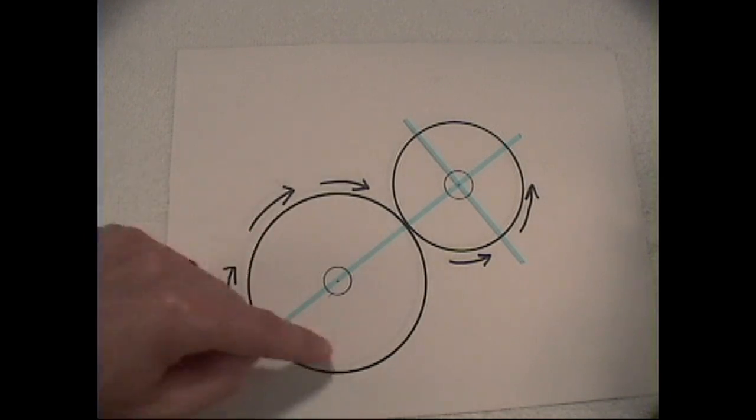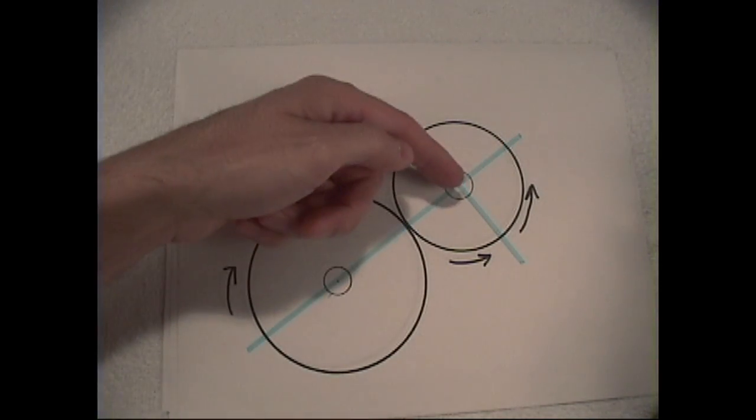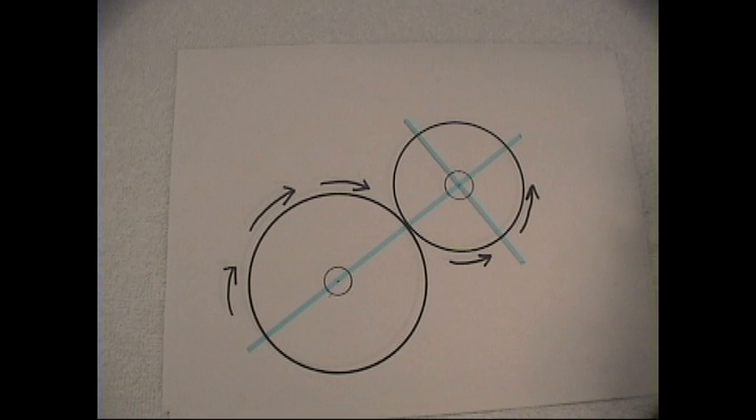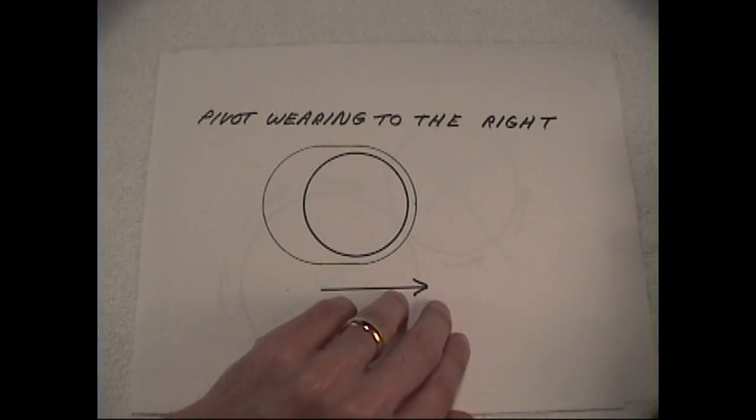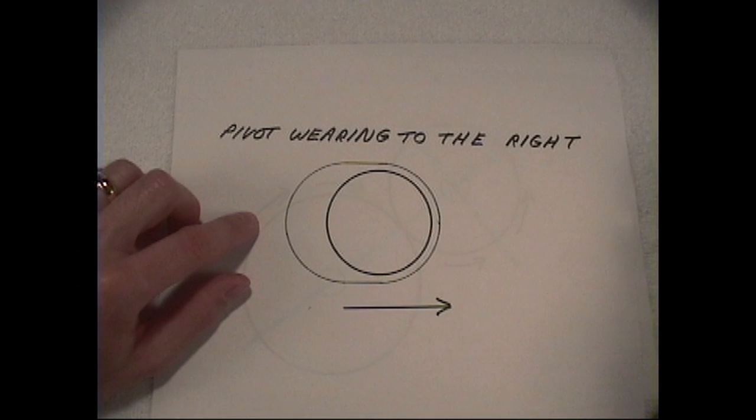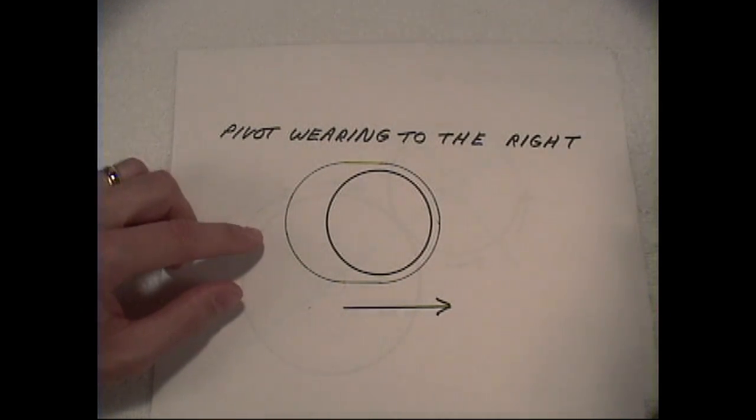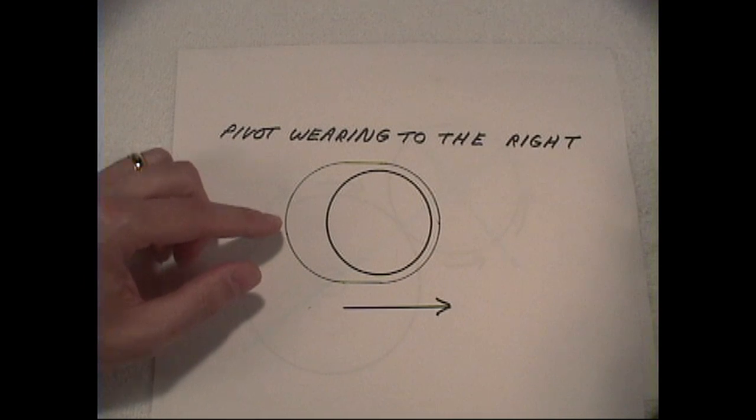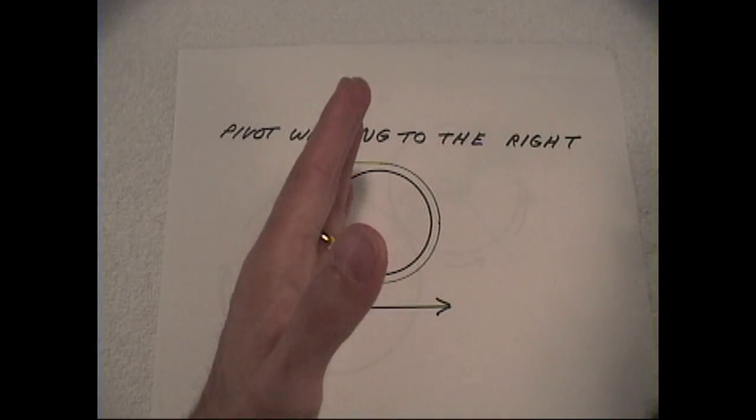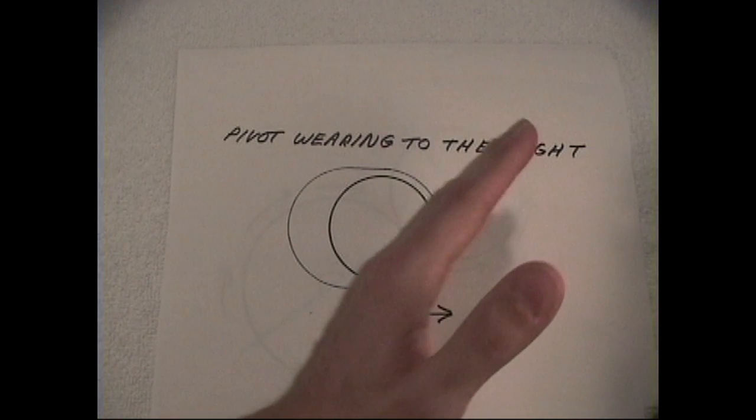Also, you'll note that the wear is always the direction that the driving gear is turning. This is our driving gear turning this direction so our wear is to the right. So what happens is that the pivot grinds into the movement plate with the aid of dirt and grime that it picks up through the years, wearing to the right and increasing the center point of the original location to the right.